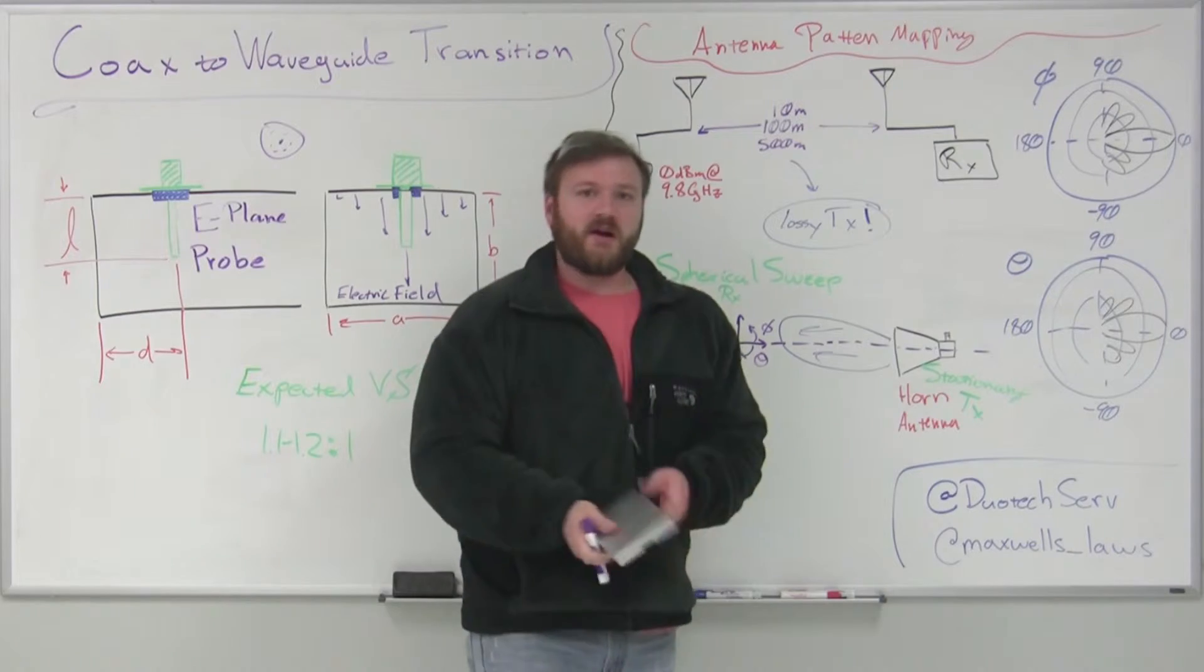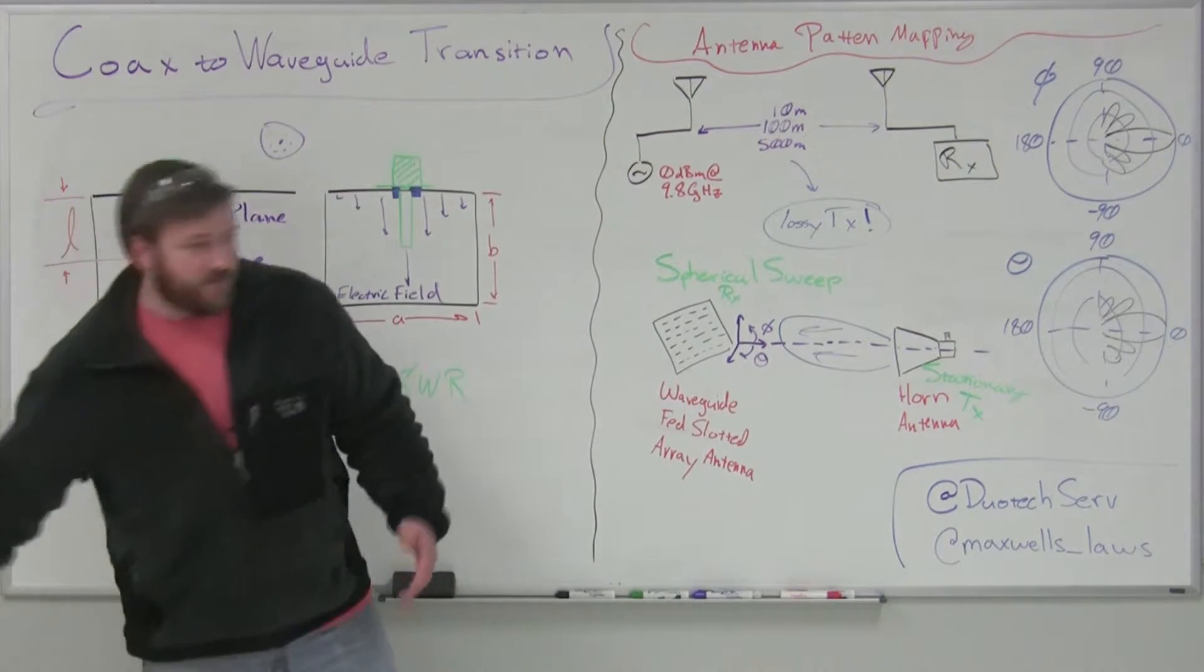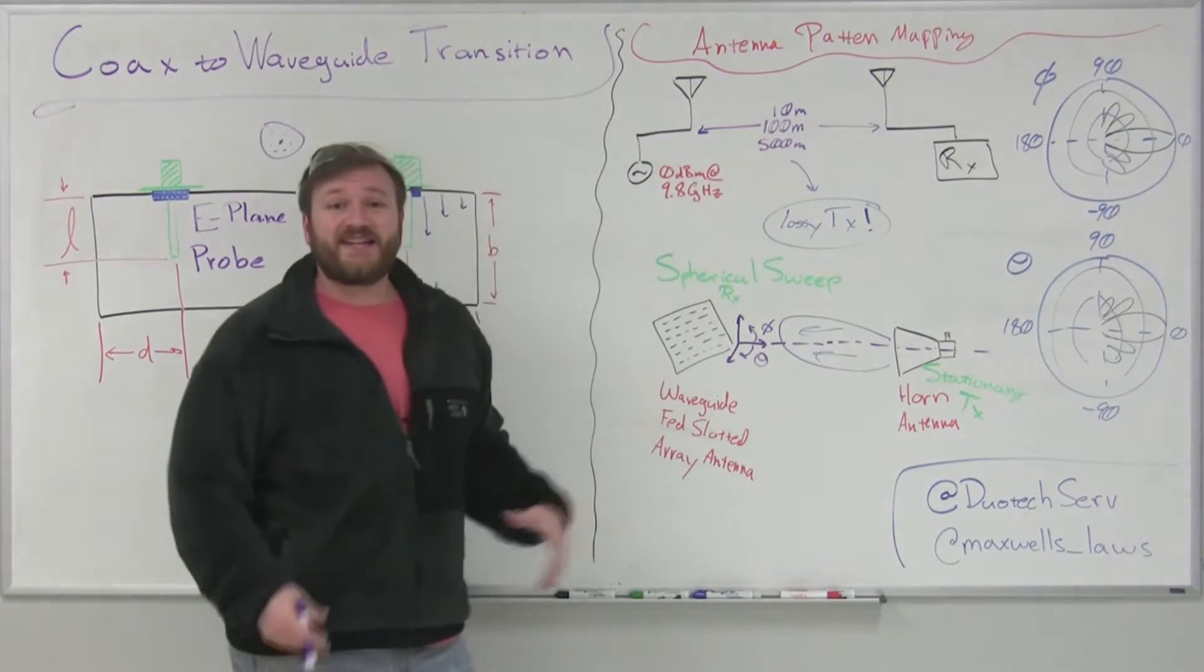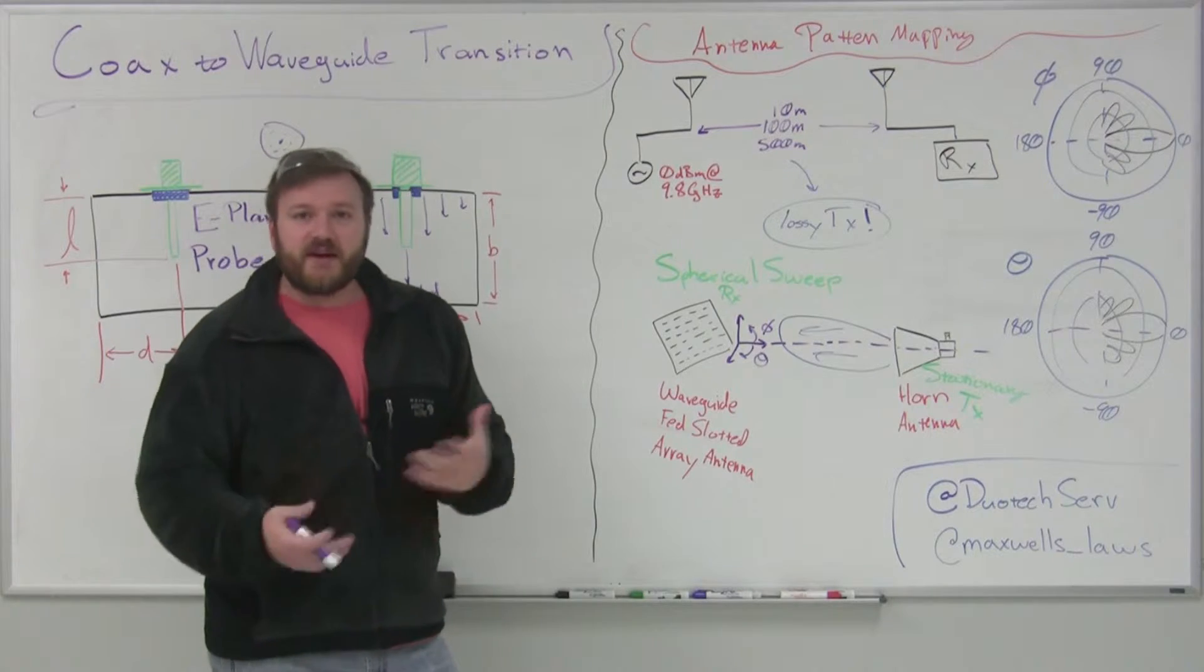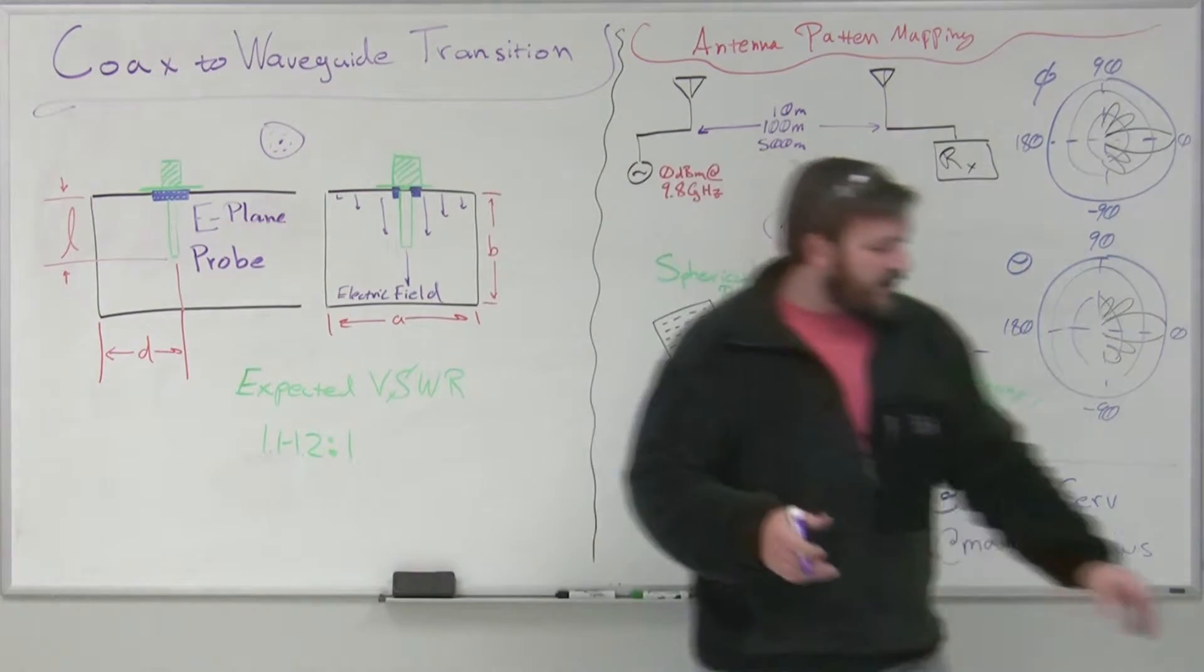But why am I doing it? Why am I cutting this chunk of aluminum? Is there any purpose? Well, yeah, there's a purpose. What I want to do is set up an antenna test to test the pattern, the gain, the directivity, really get an idea of what that beam angle looks like for my antenna.